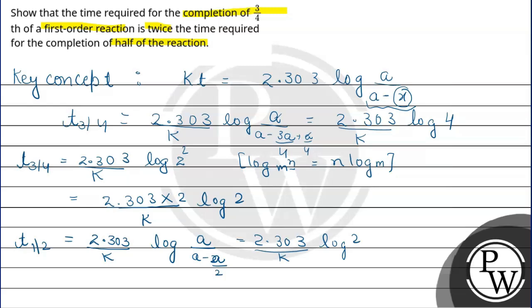Here we can see that this is t3/4 and this is t1/2. So here we can write that on equating t3/4 and t1/2, we can see that there is a difference of this 2 only. Everything else is the same. It means t3/4 is twice of t1/2.